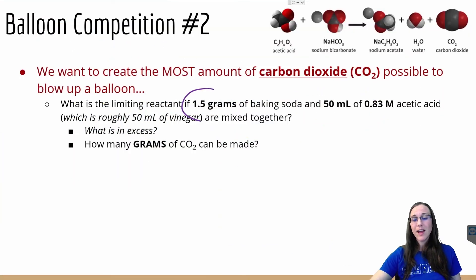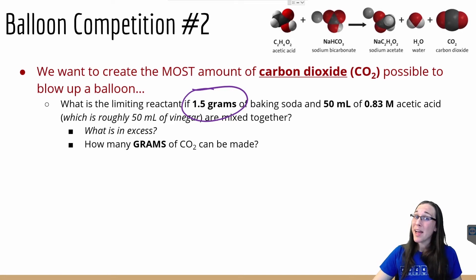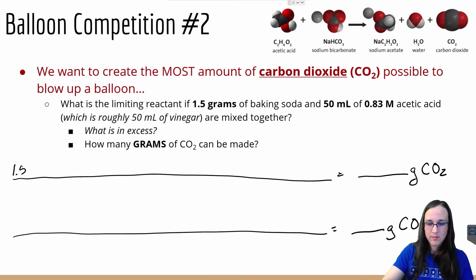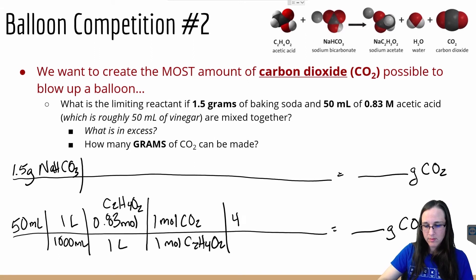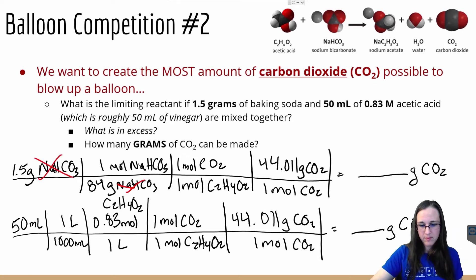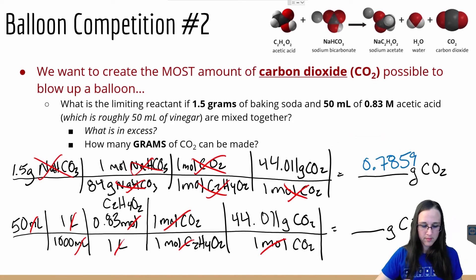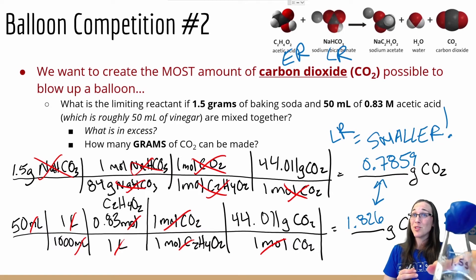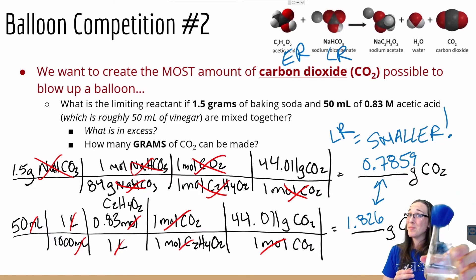But what if we have 1.5 grams of baking soda instead? Is it still the limiting reactant or is it now the one in excess? Following the same pattern we did before, go ahead and pause the video here and give it a try yourself. Hopefully you found that, again, in this scenario, baking soda is still the limiting reactant. So in our 1.5 gram trial, we know that baking soda will still be the limiting reactant.